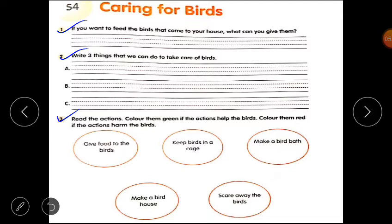First one is 'Give food to birds.' So in this action, what color can you use? Yes, green color. So you will color it green. Next question is 'Keep birds in a cage.' Kya hume birds ko cage mein rakhna chahiye? No, we should not keep the birds in cage. So we should color it with red color. Clear? So you have to complete this question in this way.